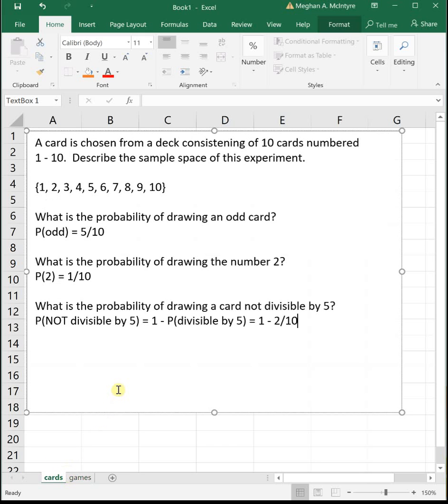Whereas the card example, this would be classical or theoretical probability, because we have some set established scenario where everything is set, it's equally likely, it's not going to change, and we're doing probabilities with it. The math itself is the same.